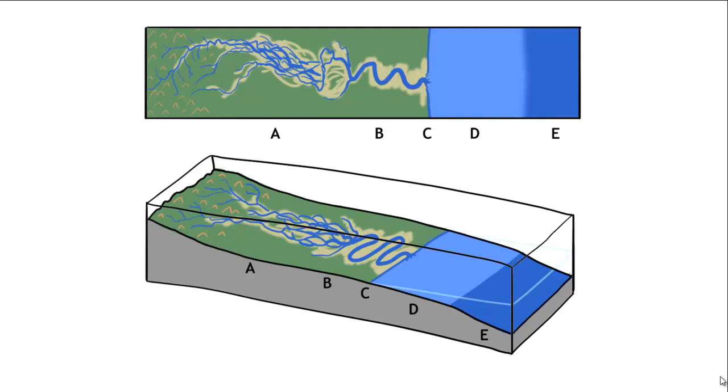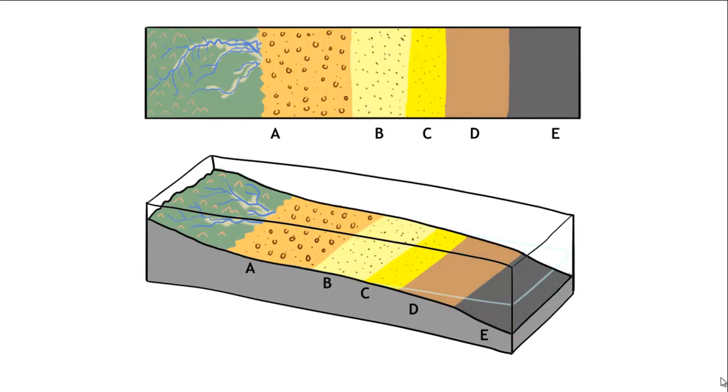We've got A and B in the terrestrial realm, and then we've got D and E in the marine realm. Now we want to think about the sediments that accumulate in these different settings. So let's go ahead and put different sedimentary facies down here.